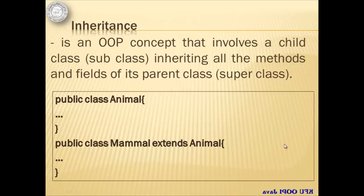Looking at the example, there are two classes here, the Animal and the Mammal. Notice the 'extends Animal' in class Mammal. That means it is declaring the Animal class as its parent class and therefore inherits all the fields and methods of the Animal class, except for its constructor. But there is a way to call the constructor of the superclass and we will see how it's done later.